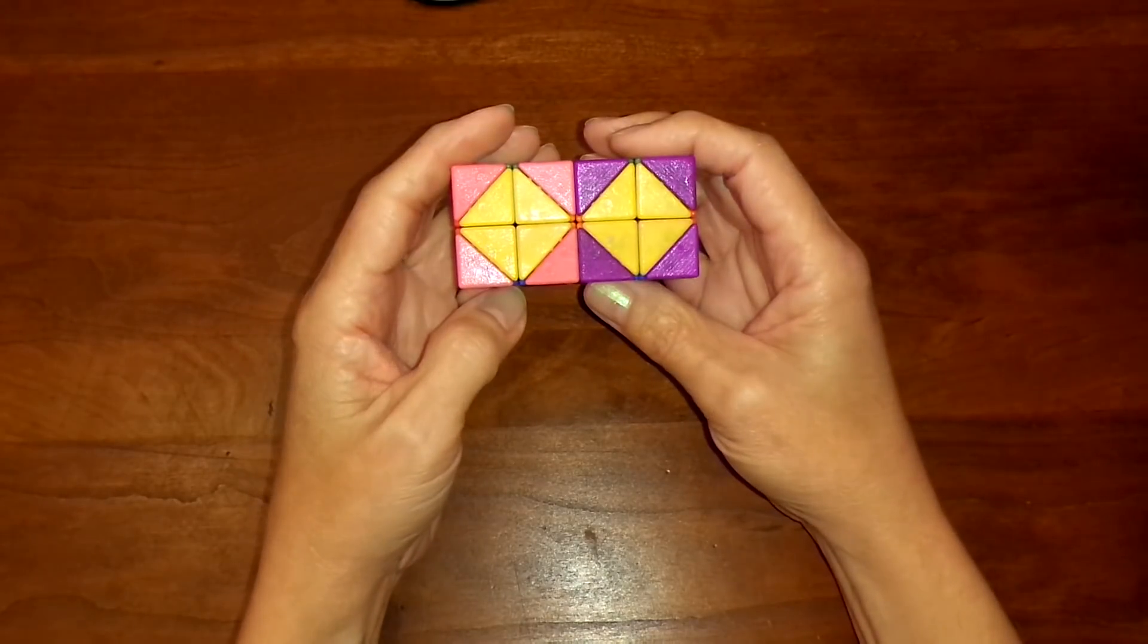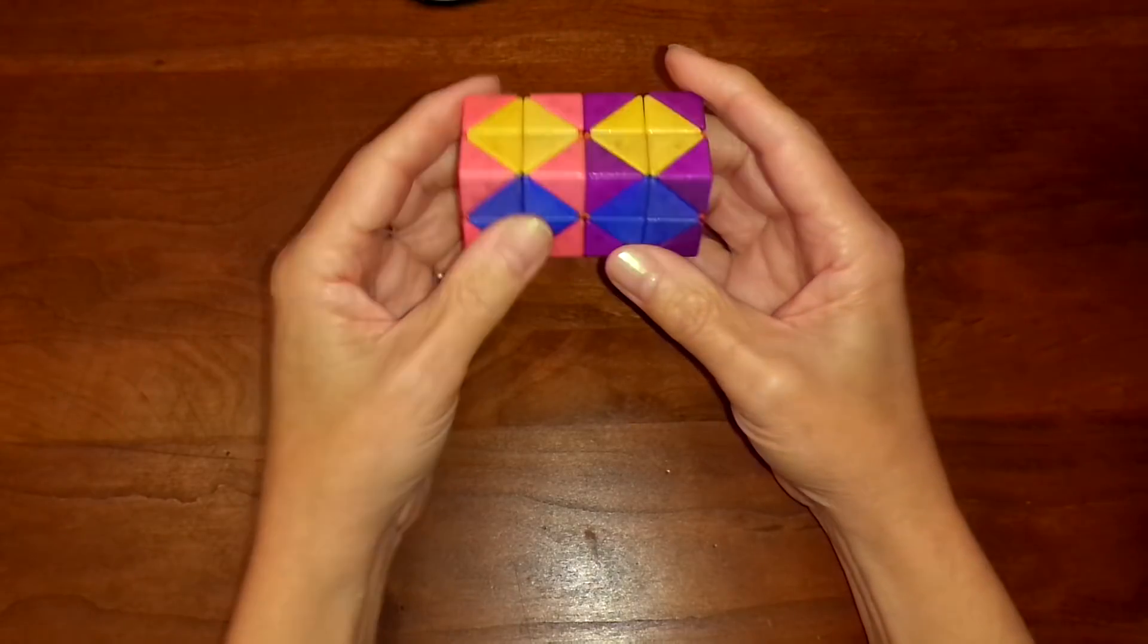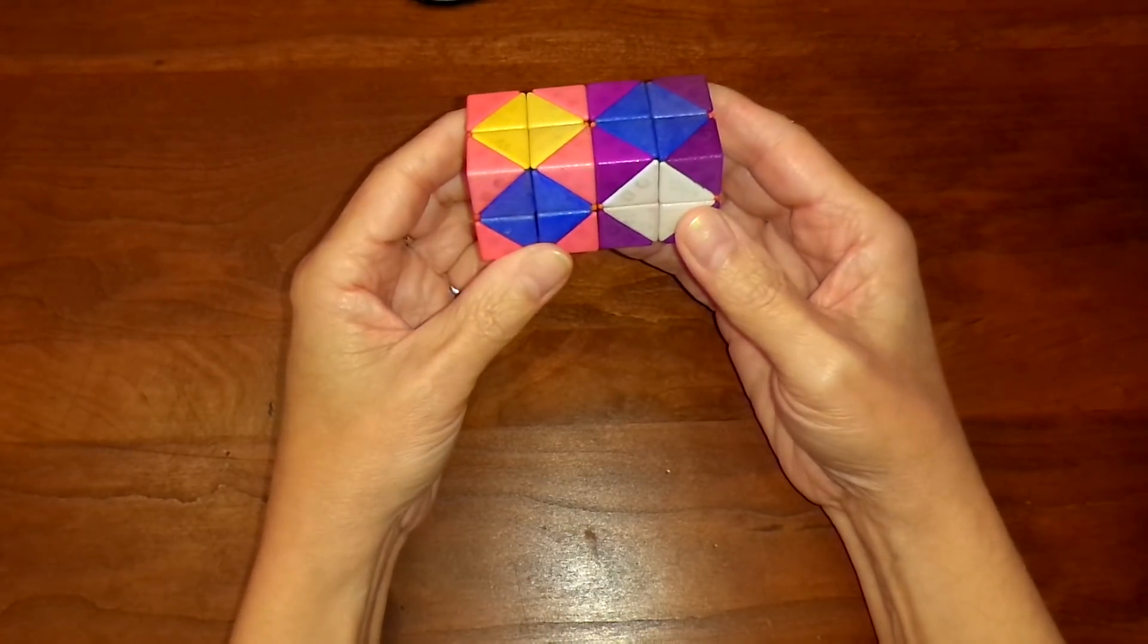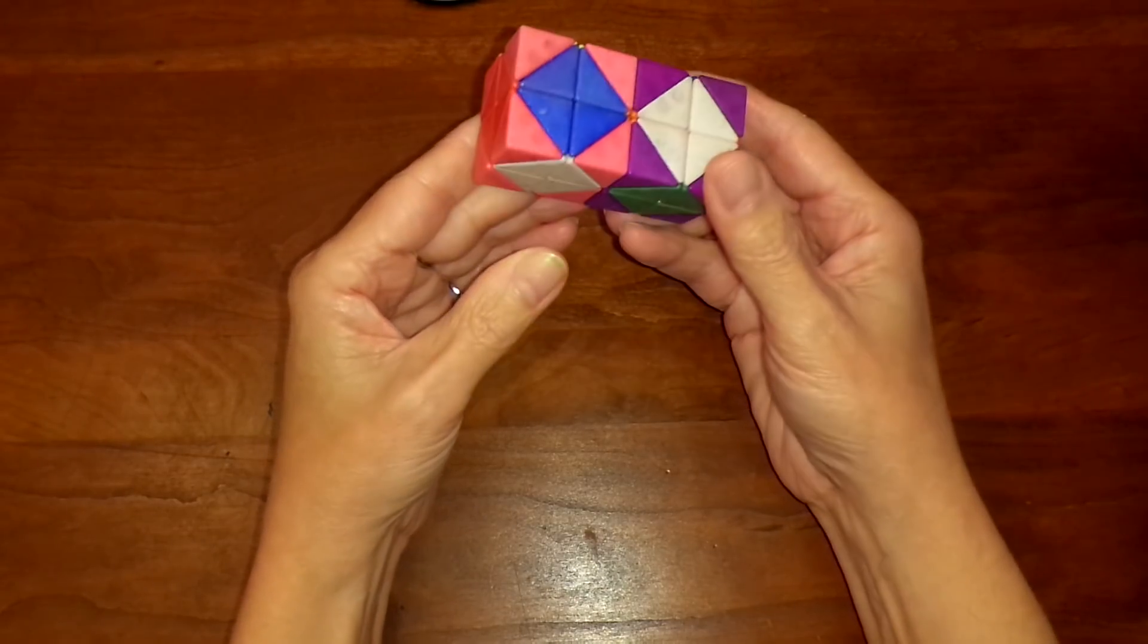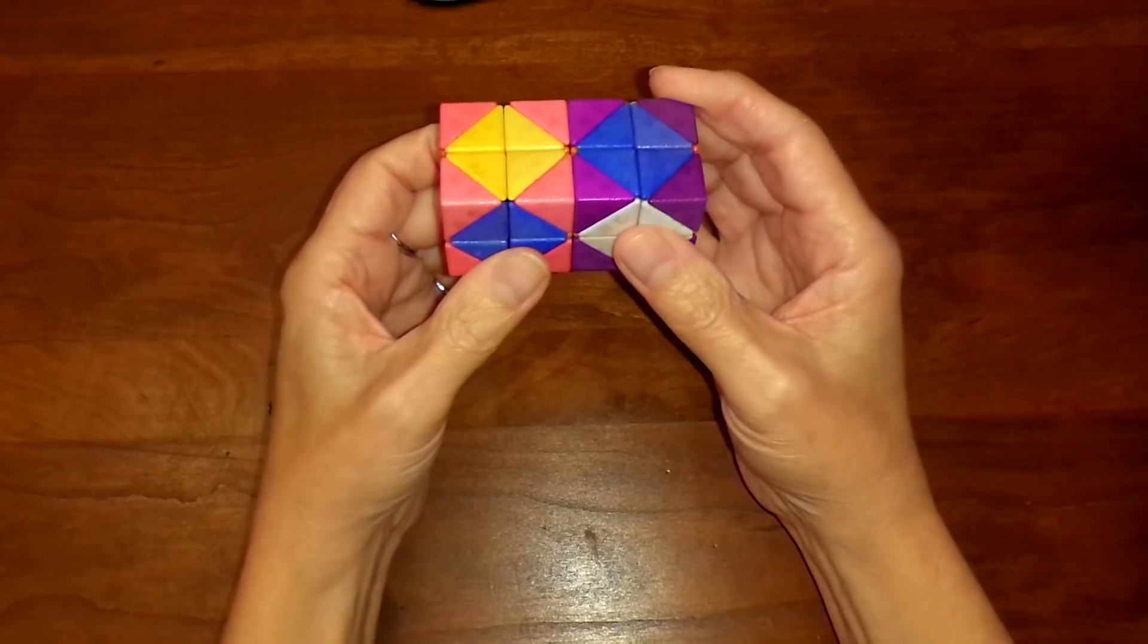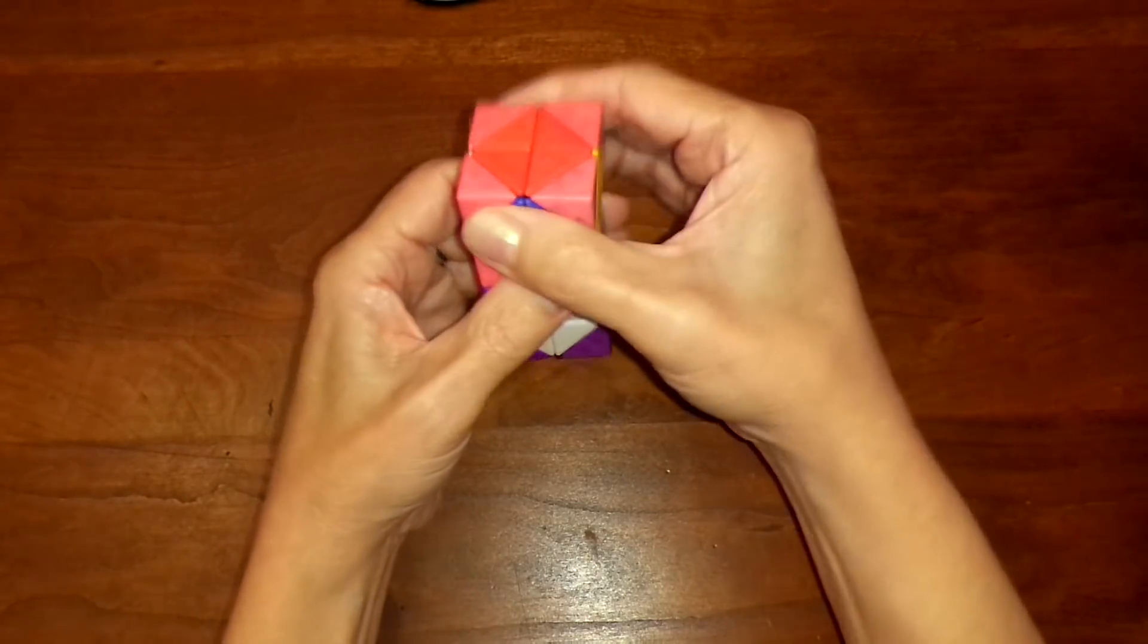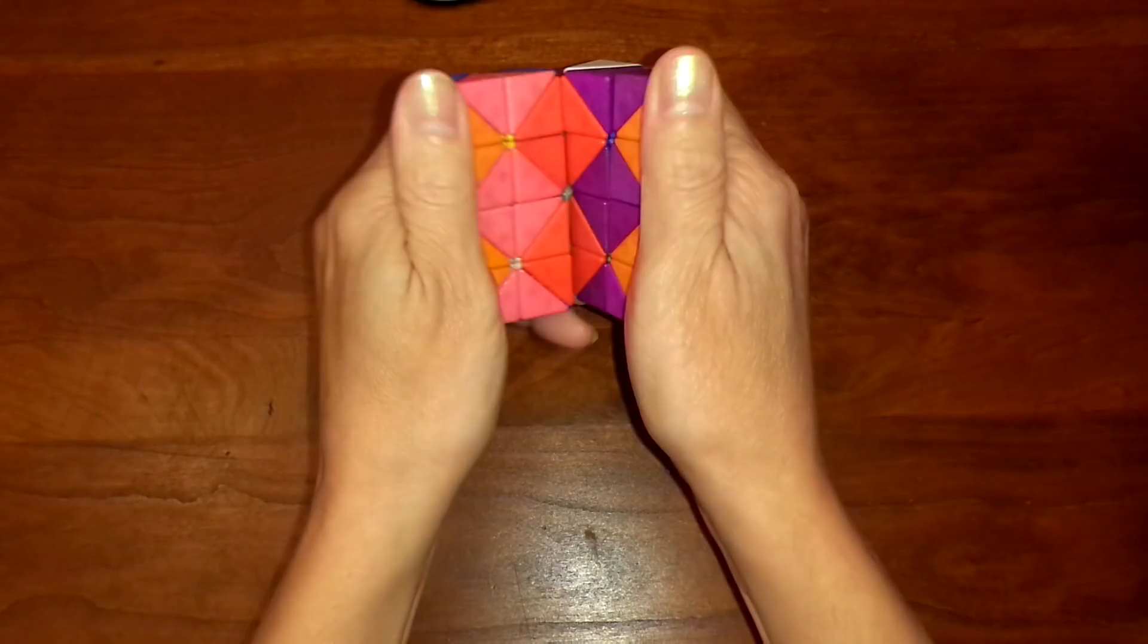And to show that I can now fully scramble it, I'll just do a simple 90 degree twist in this configuration, and then rotate some other axis on the outside. Let's go back to green and blue, and then you'll see the result.